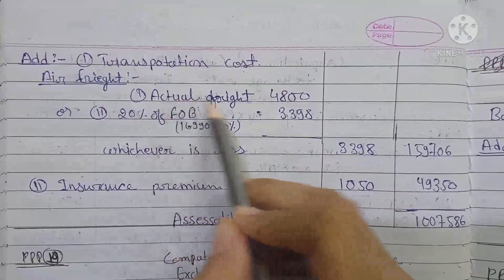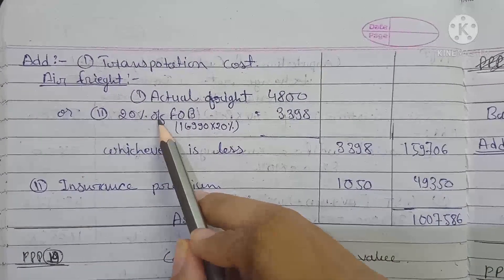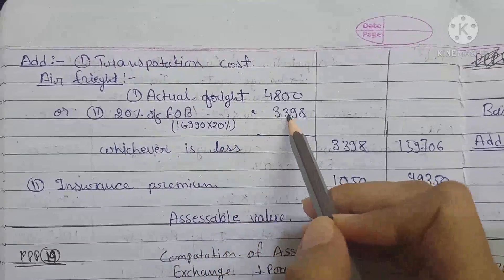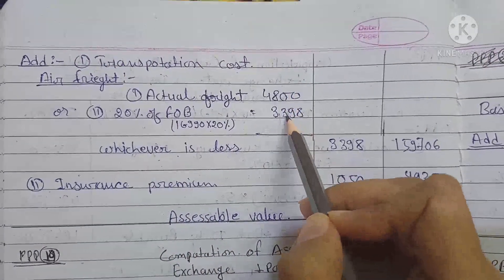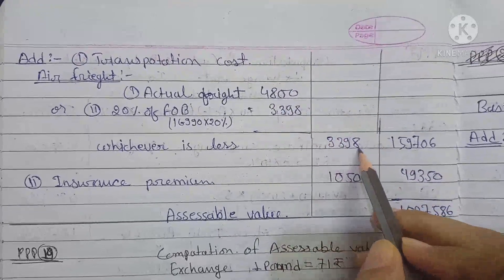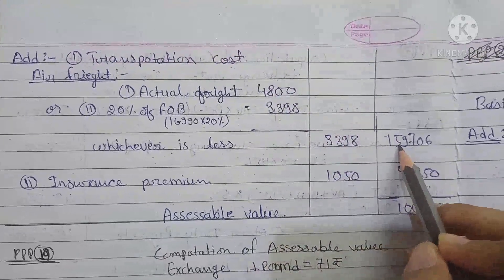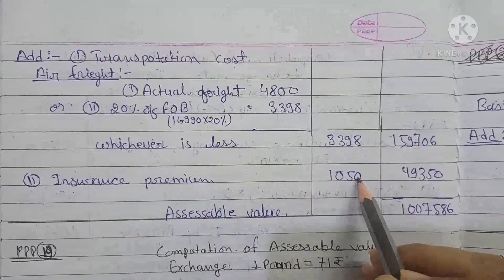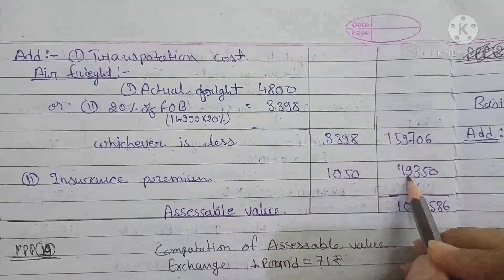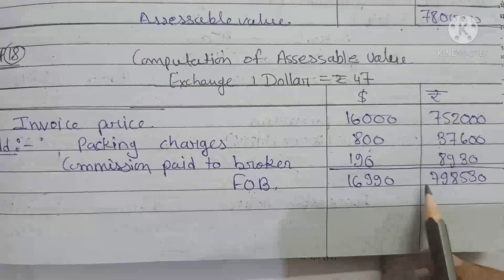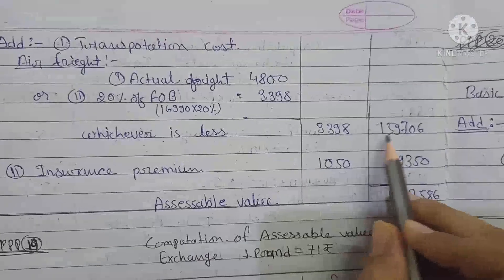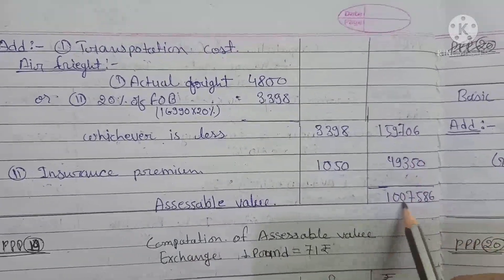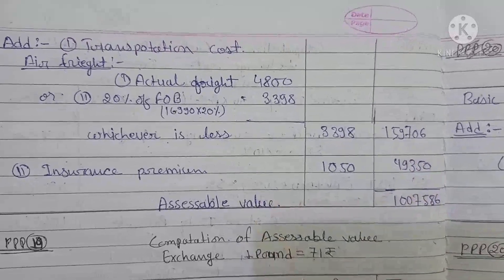We add transportation cost. Since it was air freight, we compare actual freight of $4,800 with 20% of FOB. FOB was ₹7,98,530; 20% of FOB is ₹1,59,706. We take the lower value. Insurance premium was $1,050, giving ₹49,350. Adding all components gives the assessable value of ₹10,07,586.